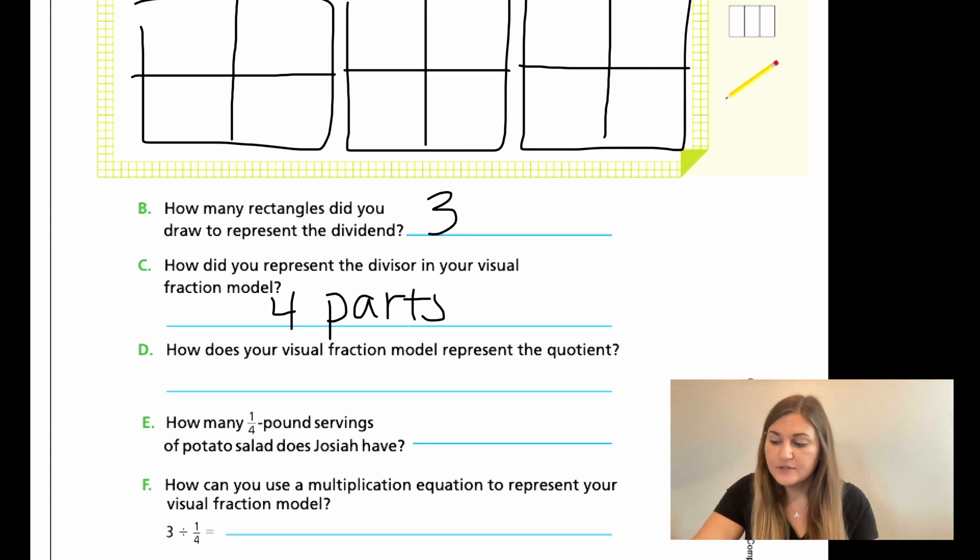And D, how does your visual fraction model represent the quotient? Remember the quotient is what we're looking for. And we're looking for how many servings does Josiah have? So that's how many parts total in all three rectangles, how many parts are there? So we're looking for the total parts.